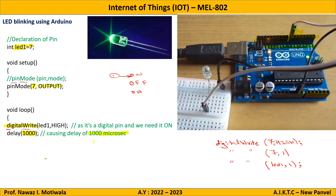I will write delay(1000), which causes a delay of 1000 milliseconds — that is one second. So for a one-second delay write delay(1000); for two seconds write delay(2000), and so on. This completes the first logical sequence — the LED is kept on for one second.